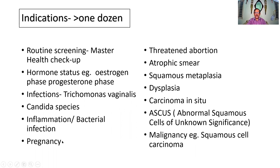In pregnancy we see cells called navicular cells. Threatened abortion can also be indicated — if the patient is likely to abort, the Pap smear can give a warning. Other indications include atrophic smear, squamous metaplasia, dysplasia, carcinoma in situ, ASCUS (abnormal squamous cells of unknown significance), and malignancy such as squamous cell carcinoma. Please memorize this entire list — it is important.